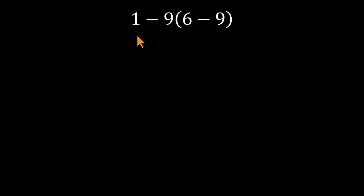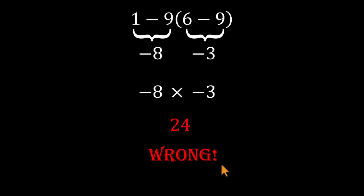A lot of folks go straight left to right. They see one minus nine, that's negative eight. Then they multiply that by the result of six minus nine. Finally, they treat it like negative eight times negative three. That becomes 24. Feels neat, feels quick, but that left to right approach completely ignores how the order of operations actually works.